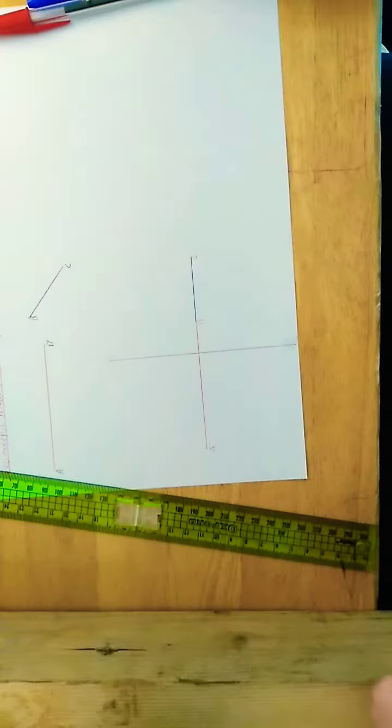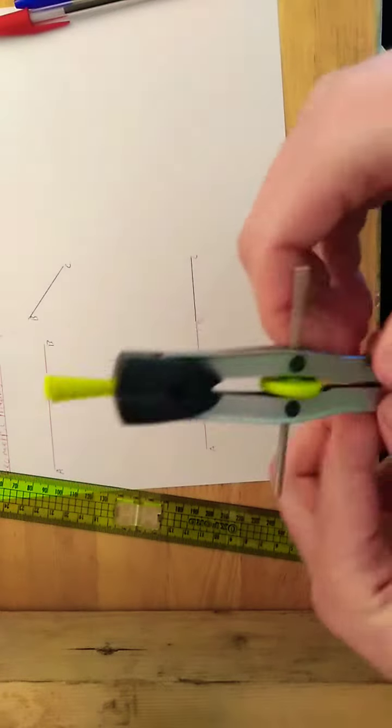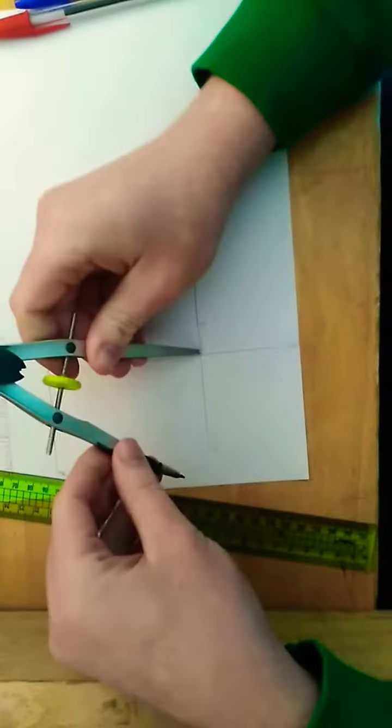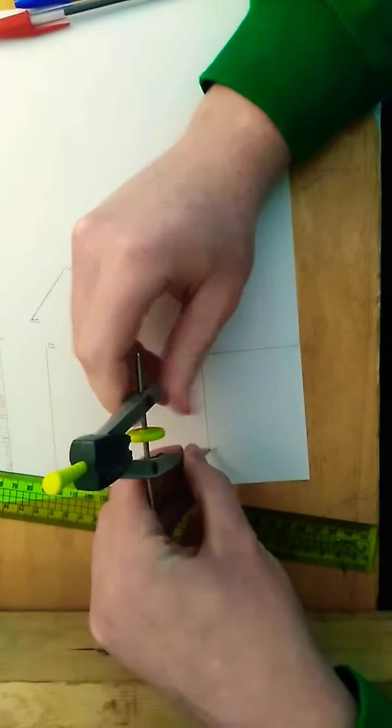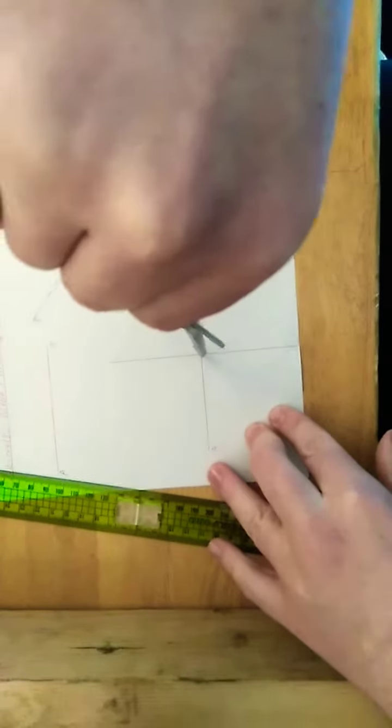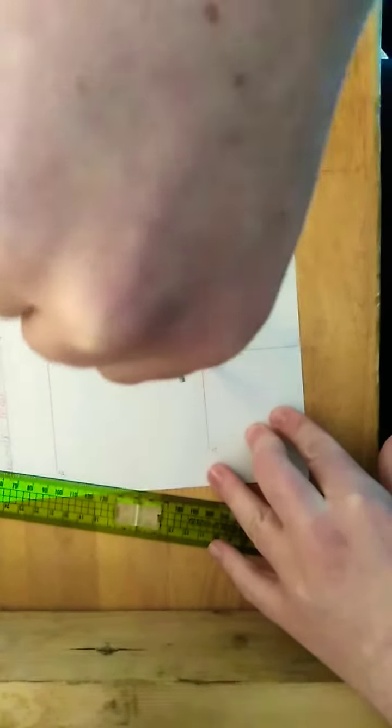And that will give you your midpoint. And then using your compass again, go from the midpoint here and draw your semicircle all the way around here.